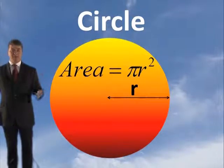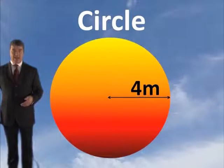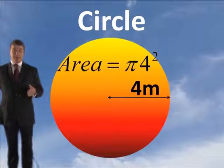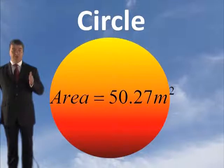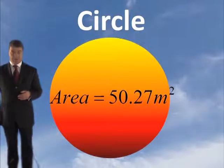Determine the area of the following circle. Using pi r squared, that radius there is 4. Pi times 4 squared equals 50.27 square metres. That's the area of that circle.